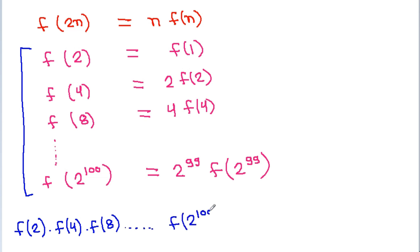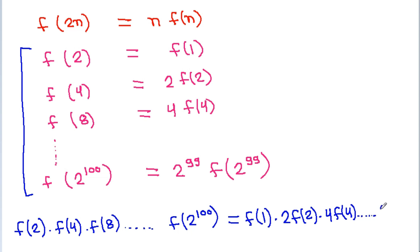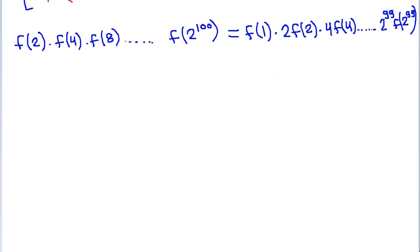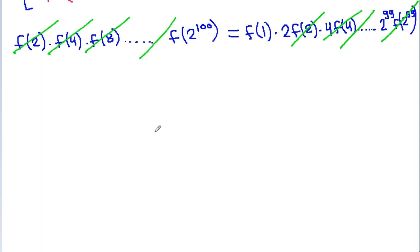If we multiply all equations, then f(2) times f(4) times f(8) up to f(2^100) will be equal to f(1) times 2·f(2) times 4·f(4) times up to 2^99·f(2^99). Now f(2) will get cancelled, f(4) will get cancelled, f(8) will get cancelled, and in the same way f(2^99) will also get cancelled.